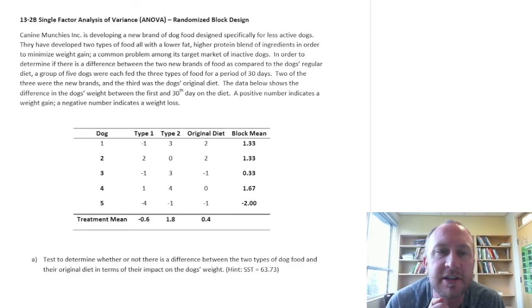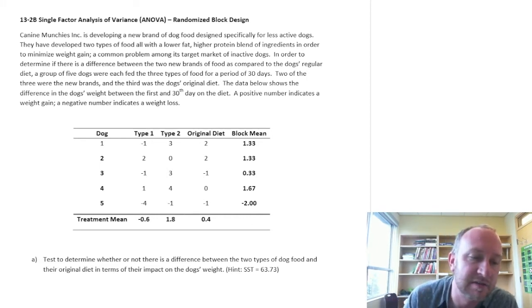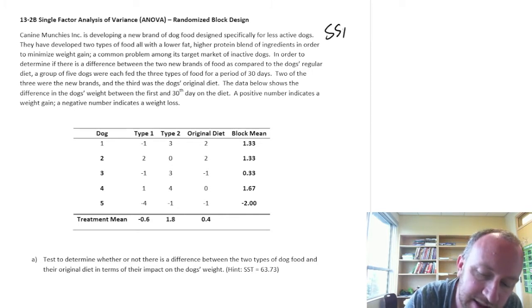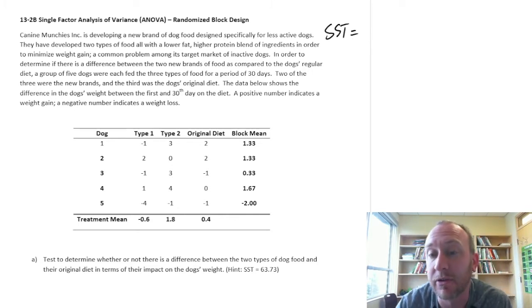Okay, here's another exercise now, a single-factor ANOVA, another randomized block design. So again, just a little recap. What we're doing here is basically accounting for the different sources of variation that exist within the data set.